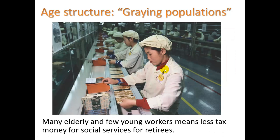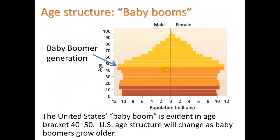We call this a graying population, where you have a larger number of older people than younger people. Many elderly and few young workers means less tax money for social services for retirees, which can really wreak havoc on a country's economy. In our country, we saw the baby boomer generation — born when soldiers came back from World War II. Today they're in their 60s, and one of our concerns economically is how do we provide care to this aging baby boomer population starting to retire and going on Social Security, Medicare benefits.